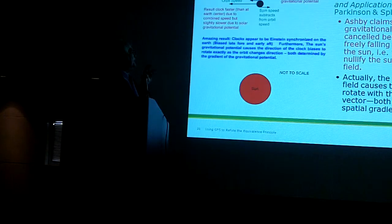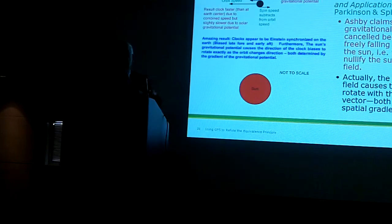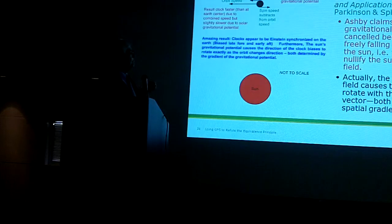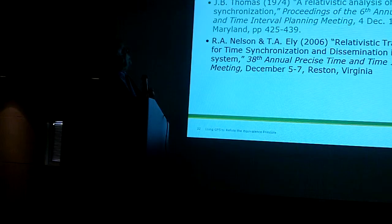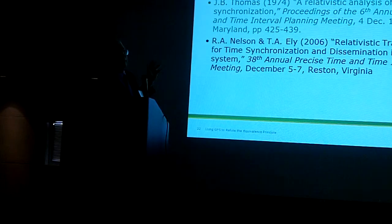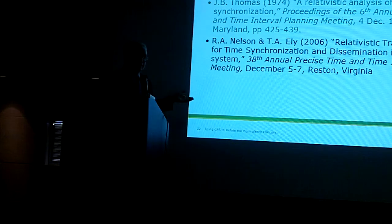Clocks appear to be Einstein synchronized on the Earth, but actually what's really happening is you've got a Galilean transformation with a clock bias. If you undid that clock bias on the Earth, it would look like the speed of light was isotropic with respect to the sun. A couple of papers say here's how to go between the sun's frame and the Earth's frame using a Lorentz transformation. Actually, they don't use a Lorentz transformation — it won't work — but they do map the clocks across without a bias term, and that's got a problem.